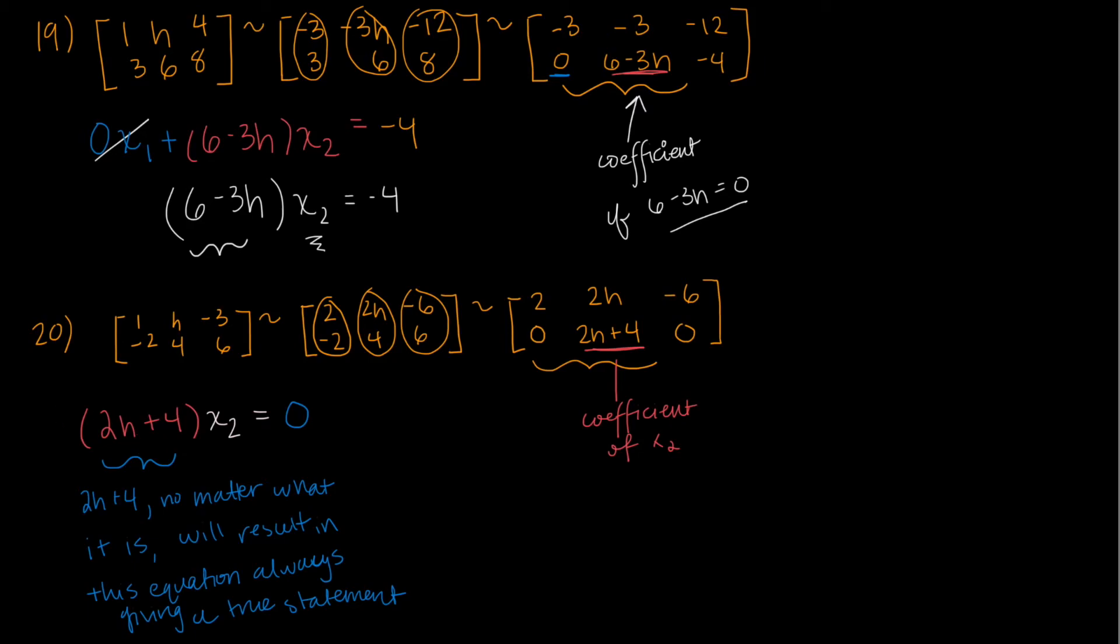The reason for that is, let's say we plug in a zero. Say h equals zero. If h equals zero, then we have two times zero plus four times x2, x2 is equal to zero. What this evaluates to is six x2 equals zero. Divide both sides by six, and you have x2 equals zero. So really, no matter what you plug in for h here, you're going to get something times x2 equals zero. And the answer is always going to be x2 equals zero.